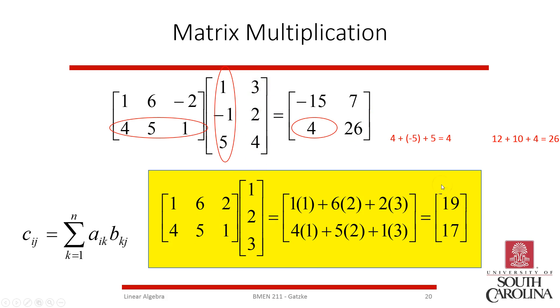Here's an example showing a 2-by-3 matrix with a 3-by-1 matrix. You take the first row dotted with the column and the second row dotted with the column to get nineteen and seventeen.